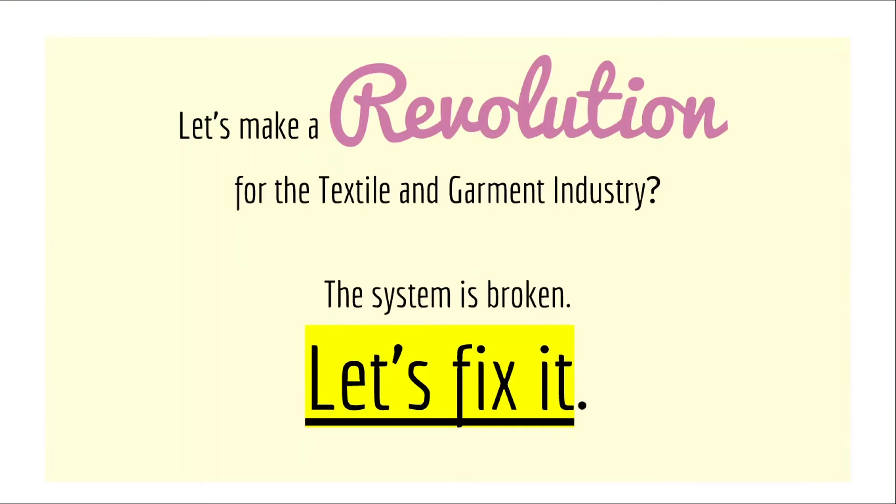On screen you can see a sewing pattern — a template from which all parts of a garment can be traced on fabric before cutting and assembling. The region where I come from produces a lot of clothes, and we can see a lot of problems in the garment industry. Today I'd like to discuss these issues and how we can solve them. Our goal is to make a revolution for the textile and garment industry — there are many examples showing the system is broken. Let's see how we can fix it.